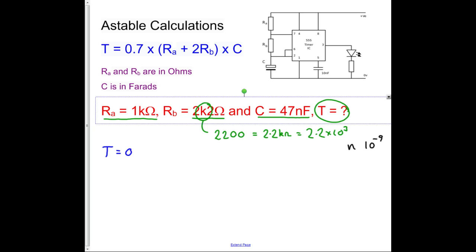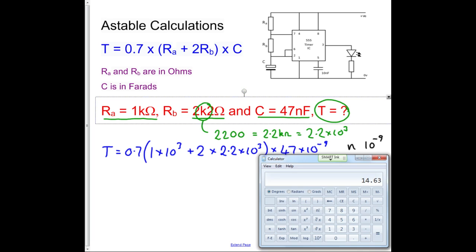So T equals 0.7, so it's Ra, which is 1 times 10 to the 3, plus 2 times 2.2 times 10 to the 3, times by 47, times 10 to the minus 9. And what we'll do is we'll pull up our Windows calculator, and we'll see if we can do this calculation.